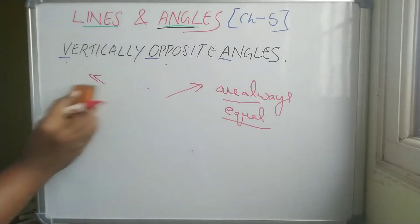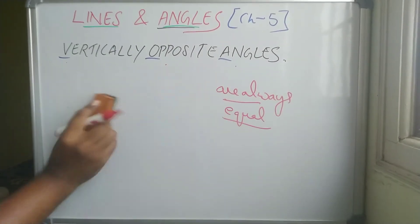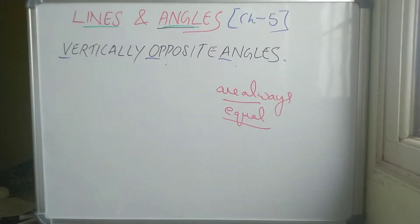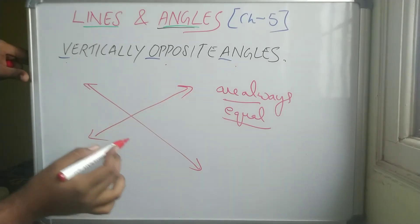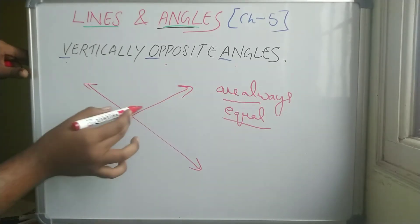So basically you have to remember vertically opposite angles are always equal. Fine. No matter what. So two lines intersect at a point, forming an angle.